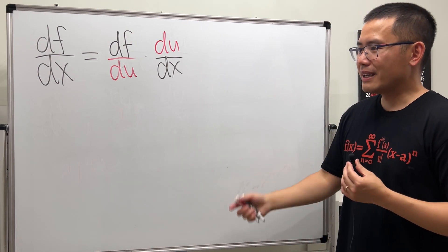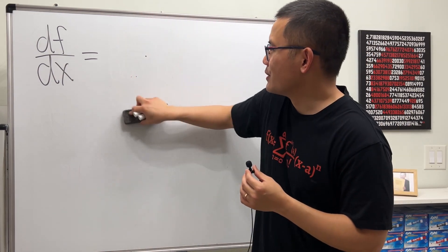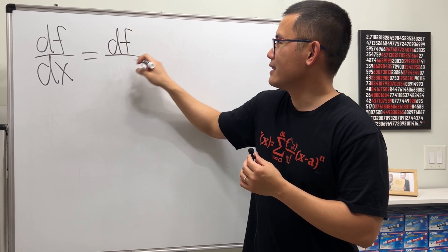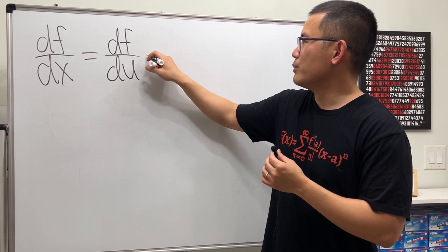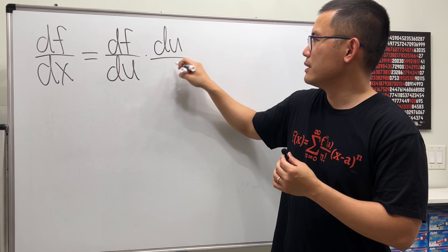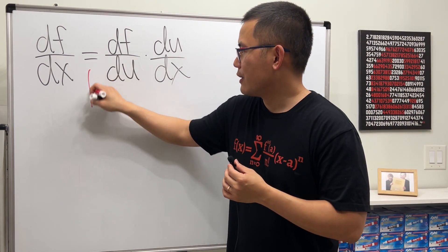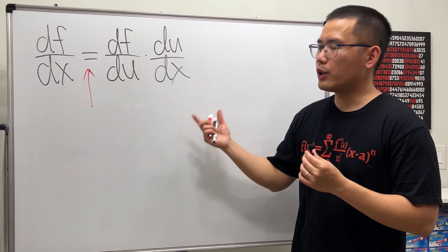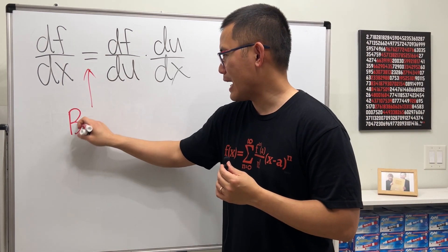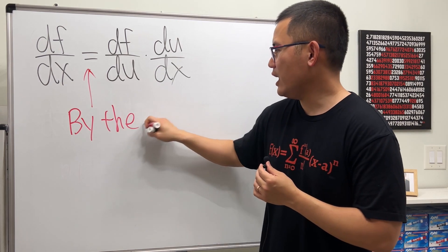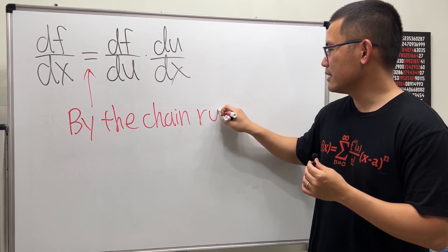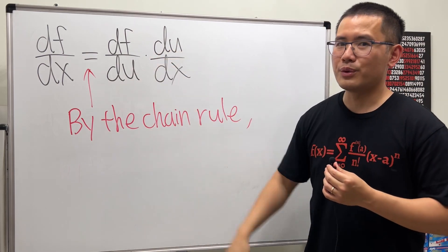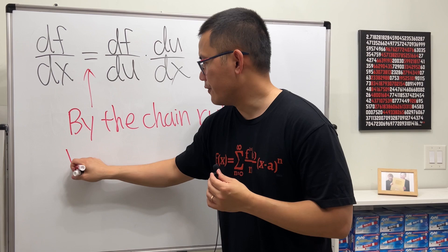So what is a better way to say this? First I would just like to write this down with the same color: df/du and then you multiply by du/dx. So I will say this first - I will state that we are using the chain rule. This is how we can make everything clear, like why we have the extra thing right here. By the chain rule, we first...